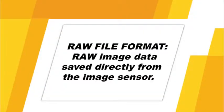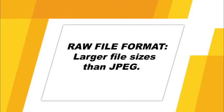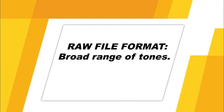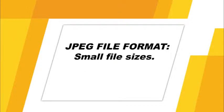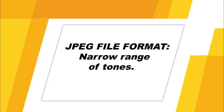Raw file sizes are considerably larger than JPEG files. Raw files have a much broader range of tones — shadow and highlight areas have more detail than other image files, and you can extensively edit raw files without losing image data. The other image quality setting on the D5200 is JPEG. JPEG files are a standard compressed file format that is supported by any image software. Because JPEG files are compressed, the file sizes are very small compared to raw files, but they also have a much narrower range of tones and will lose some image data each time they are saved.